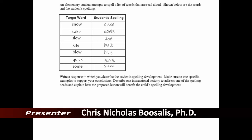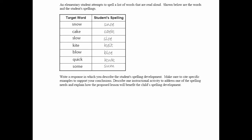Let's go to page 20 now and learn how to get through the spelling data quickly and effectively, along with the type of lesson plan that I would do. Remember that you have four categories for spelling: pre-phonetic, phonetic, transitional, and conventional.